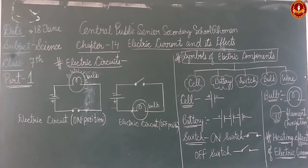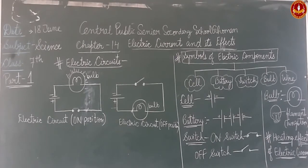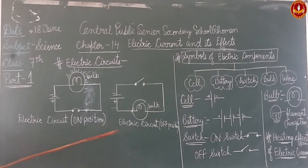So our chapter starts with the topic: electric circuit. An electric circuit is the arrangement of various electric components like battery, cell, bulb, switch, wires, etc. There are two types of electric circuits: one is open electric circuit and the second is closed electric circuit.